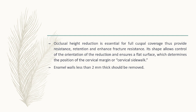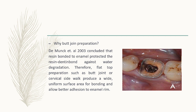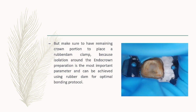The butt joint preparation — as D'Munk 2003 concluded — allows the resin bond into enamel to protect the resin-dentin bond against water degradation. Flat-top preparations such as the butt joint or cervical sidewall produce a wide uniform surface area for bonding and allow better adhesion to the enamel rim. Enamel walls less than 2 mm thick should be removed as they are unsupported and easily broken. We must ensure enough remaining crown portion to place a rubber dam clamp, since isolation is the most important parameter for optimal bonding.